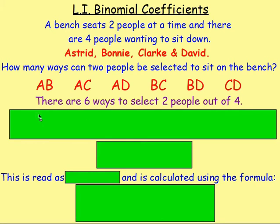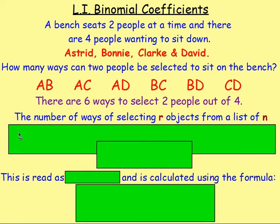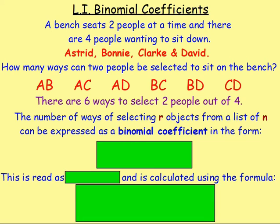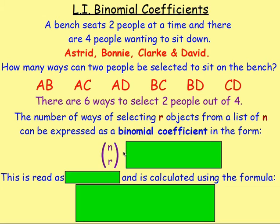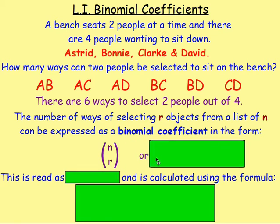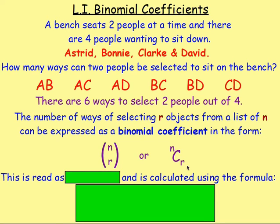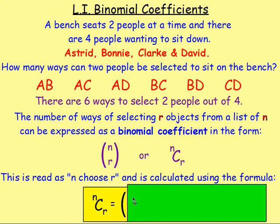When we are selecting r objects from a list of n objects in maths, we can express that as what is known as a binomial coefficient. You write a binomial coefficient in one of two ways: either n on the top and r on the bottom inside brackets, or as a capital C with n up top and r down below. This is read as 'n choose r'.